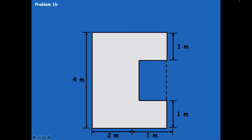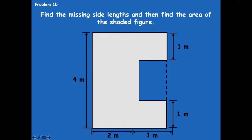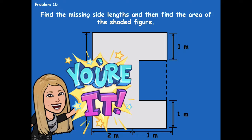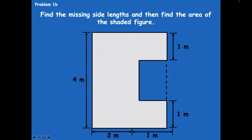Here is problem 1b. This is what you should see on your paper. We're going to find the missing side lengths and then find the area of the shaded figure. You guys are actually going to do this one on your own, so pause the video. Find the missing side lengths and then find the area of the shaded figure. Now what might be a little bit tricky is finding the area of these parts here, but remember you can use your opposite side lengths to help you solve that. Go ahead and pause the video, solve, and then click play when you're ready to go over it together.